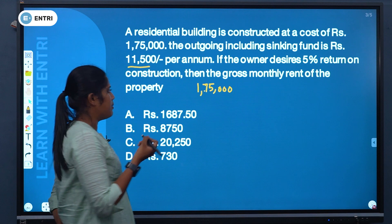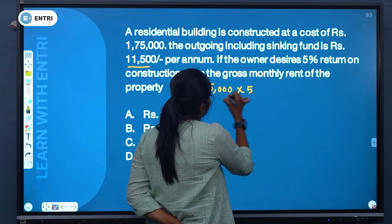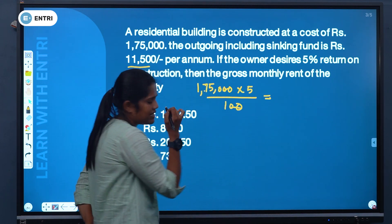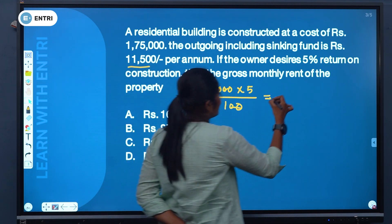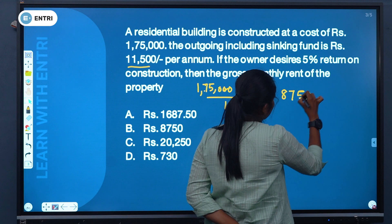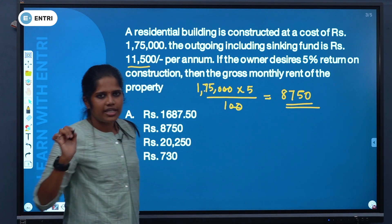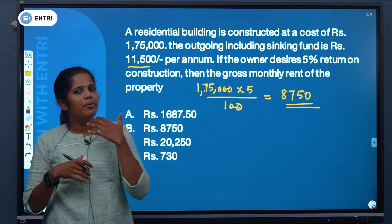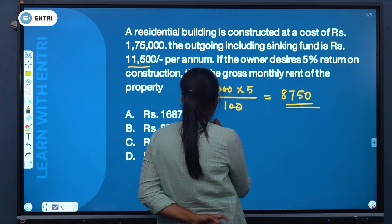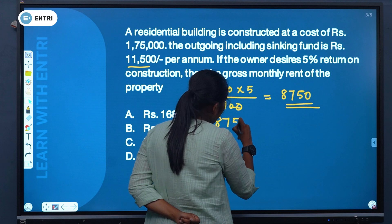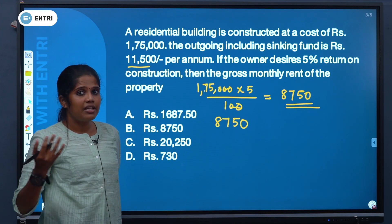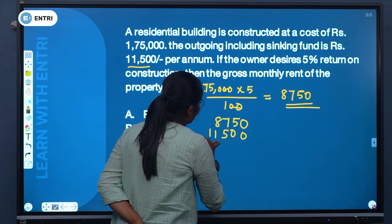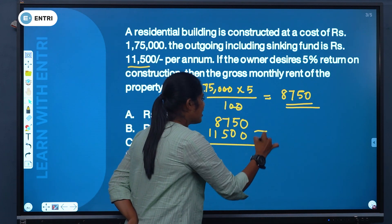The cost of construction is Rs. 1,75,000. The return on investment at 5% is: 1,75,000 into 5 divided by 100, giving Rs. 8,750. Adding outgoings including sinking fund of Rs. 11,500, that is the standard return calculation.